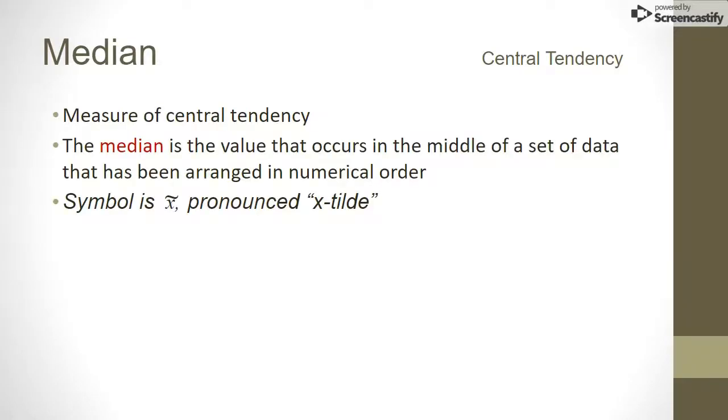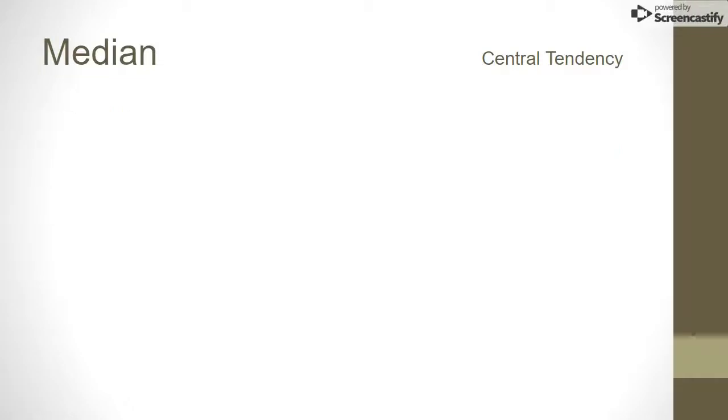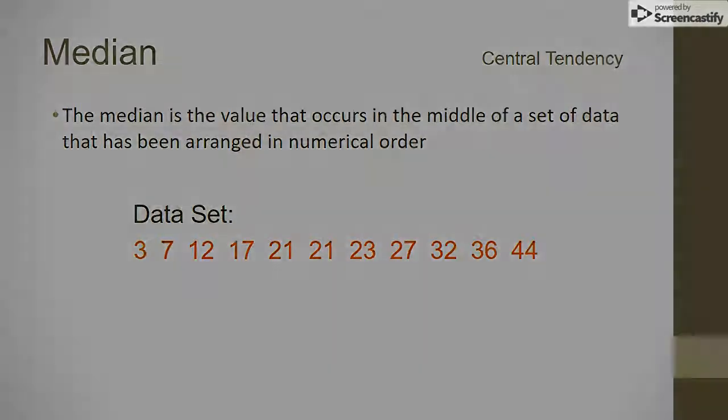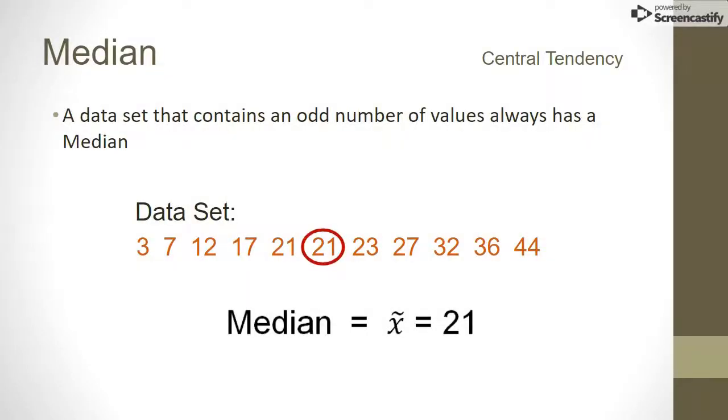The median of a set of data is the value that occurs in the middle when the numbers have been arranged in numerical order. It's identified by this symbol, which is pronounced x tilde. When finding the median, it helps to first arrange the data in sequential order. Now it's easier to systematically eliminate the highest and lowest values until you arrive at the median, or middle value. In an odd-numbered data set like the one shown, this is easy because there will be a value in the middle. In this case, the median is 21.